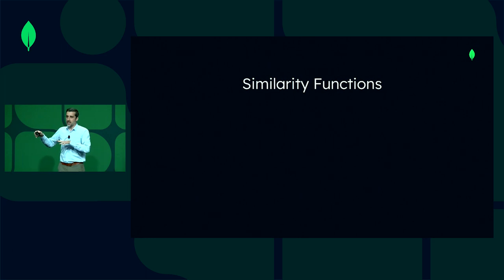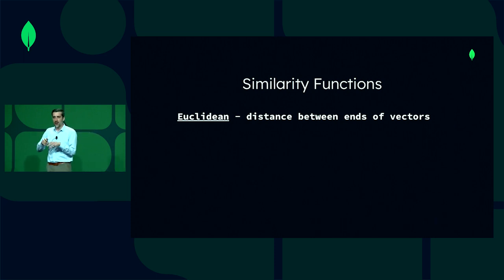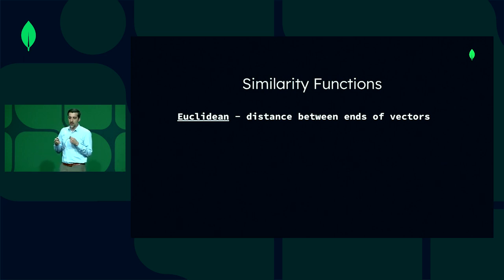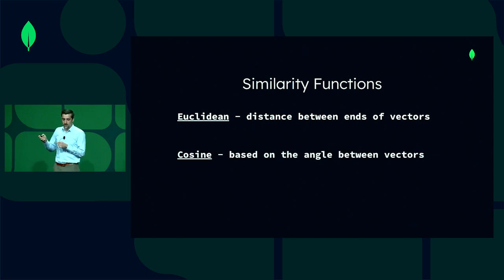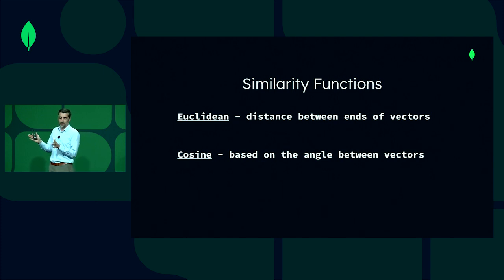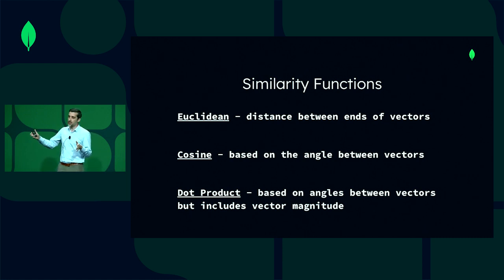When you use k-nearest neighbors, you have to define a specific similarity function. In Atlas Vector Search, we support three — the three most popular ones. The first is Euclidean distance, which represents the distance between the ends of vectors. The next is cosine, which represents the angle between vectors. And the third is dot product, which is based on both the angle between the vectors and the magnitude.